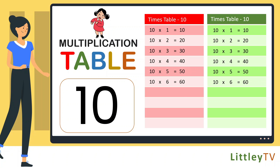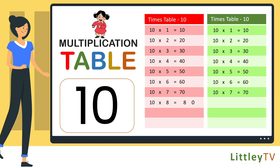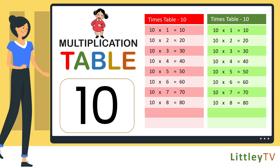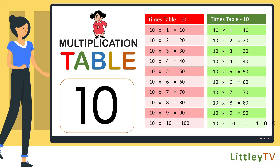10 sevens are 70, 10 eights are 80, 10 nines are 90, 10 tens are 100.